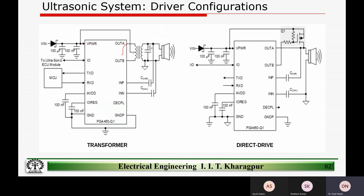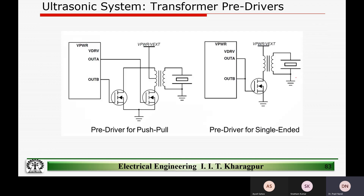This center-tap configuration is used to increase the drive strength of the transducer further. The direct-drive case is straightforward with no transformer. In the push-pull configuration using NMOS FETs, one terminal can be pulled down to zero while the other is at the power supply, then the other terminal pulled to zero — creating a push-pull drive. This gives a higher drive strength compared to the single-ended configuration, assuming everything else remains the same.